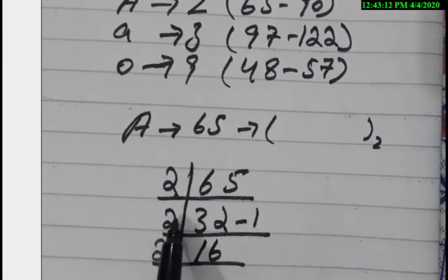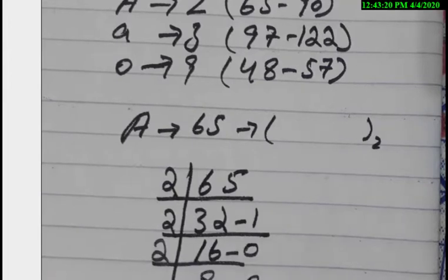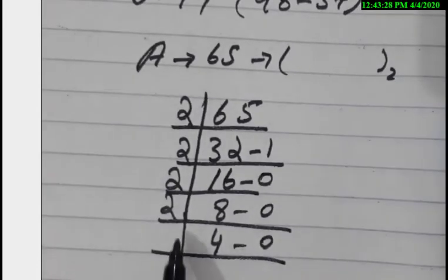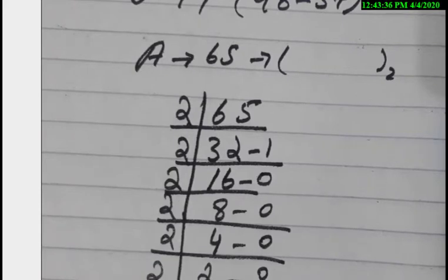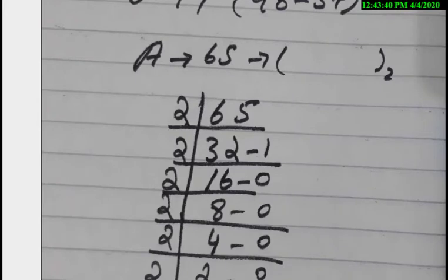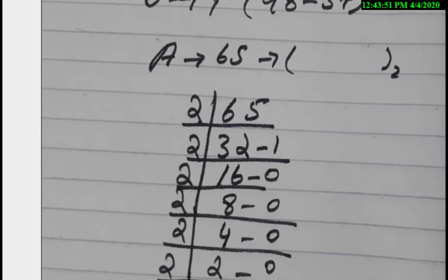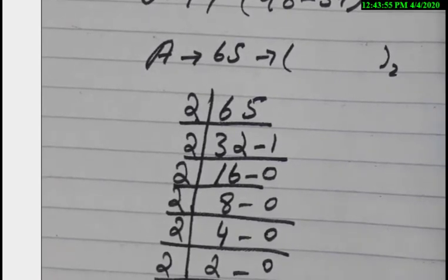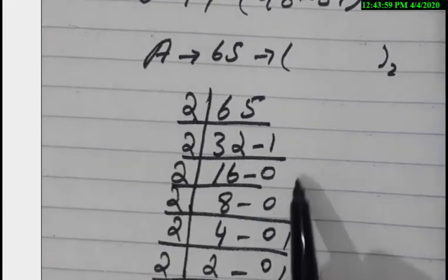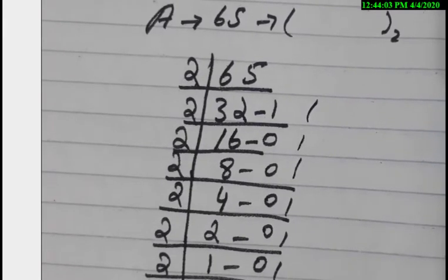Continuing the division: 8 divided by 2 gives 4 with remainder 0. Then 4 divided by 2 gives 2 with remainder 0. Then 2 divided by 2 gives 1 with remainder 0. Finally, 1 divided by 2 gives 0 with remainder 1. Reading the remainders from bottom to top gives us the binary number 1000001. This is the binary value corresponding to the decimal code 65, which represents the letter 'A'.